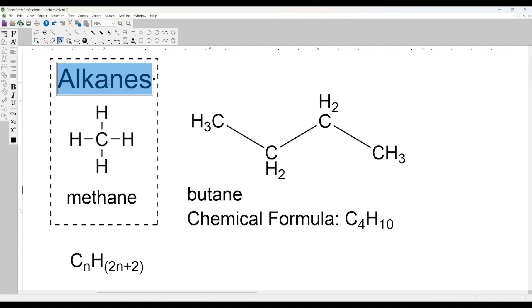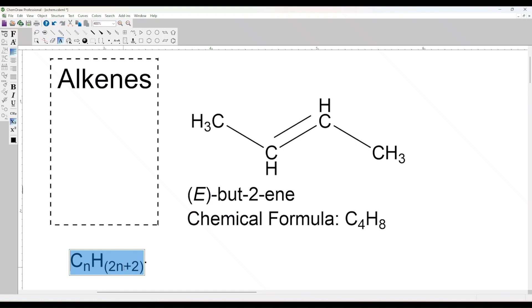The next are alkenes, that contain at least one double bond between the carbon atoms, with the general formula CnH2n. An example is ethene.